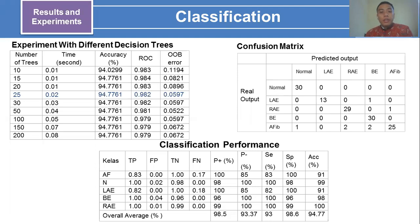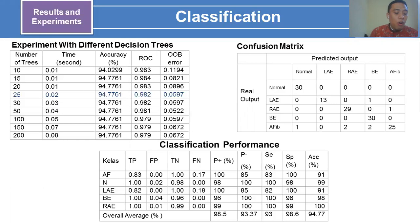In the classification method results, from the experiment with different decision tree counts, the optimal number of decision trees is 25. From the confusion matrix table, it is known that the highest error prediction values are for left atrial enlargement and atrial fibrillation. From the classification performance, our proposed method achieves a sensitivity of 93%, specificity of 98.6%, and accuracy of 94.7%.